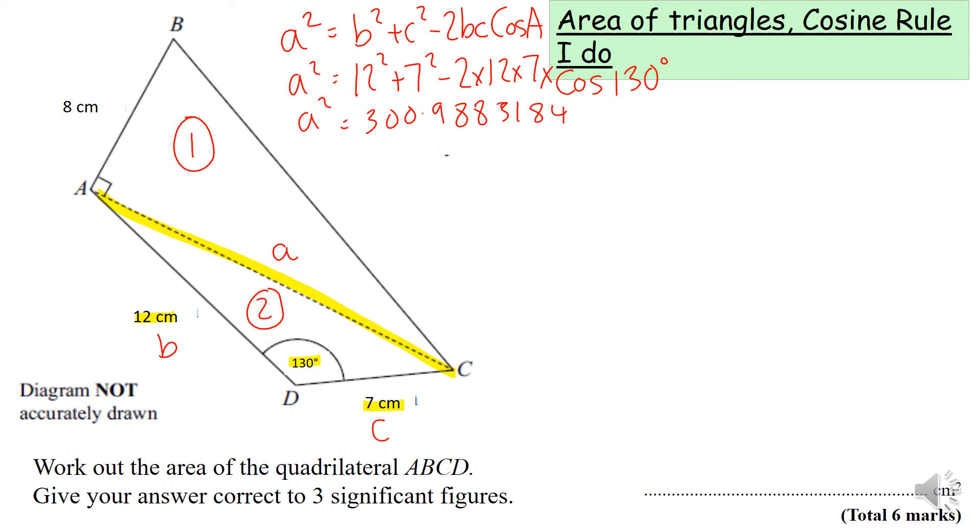A squared equals 300.988. To get a, I need to square root, so a equals 17.34901491. Now we're not going to round at this stage. Remember, never round in the middle of your working out.